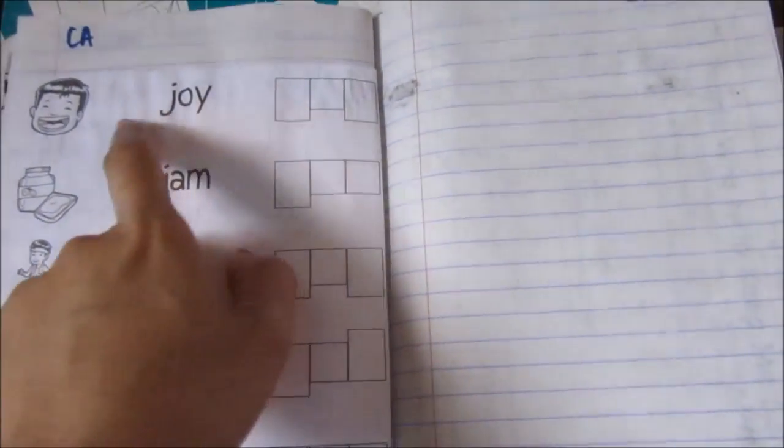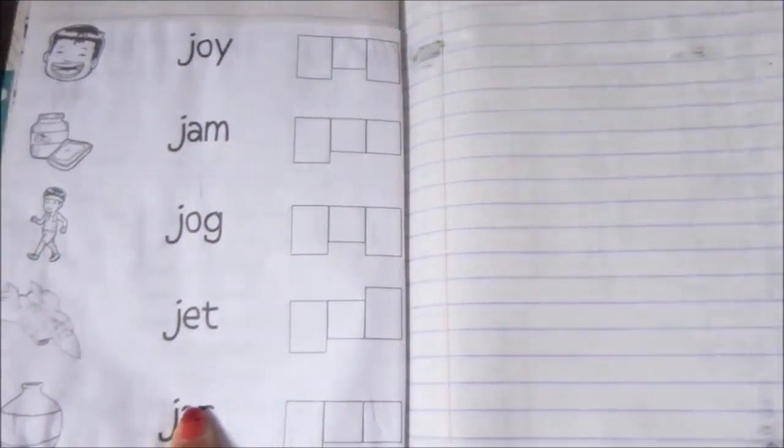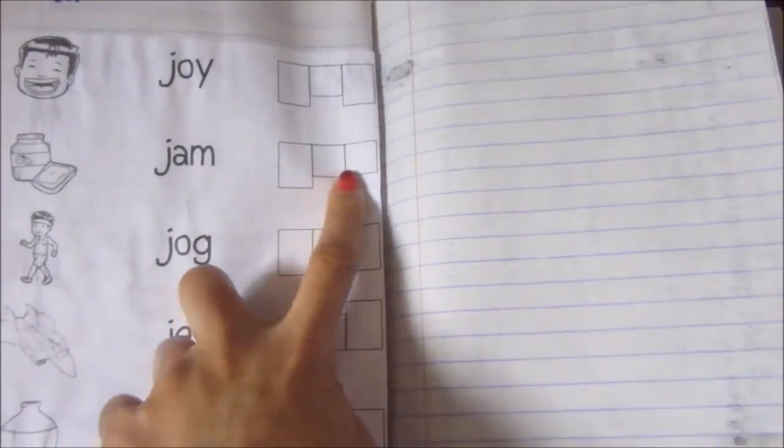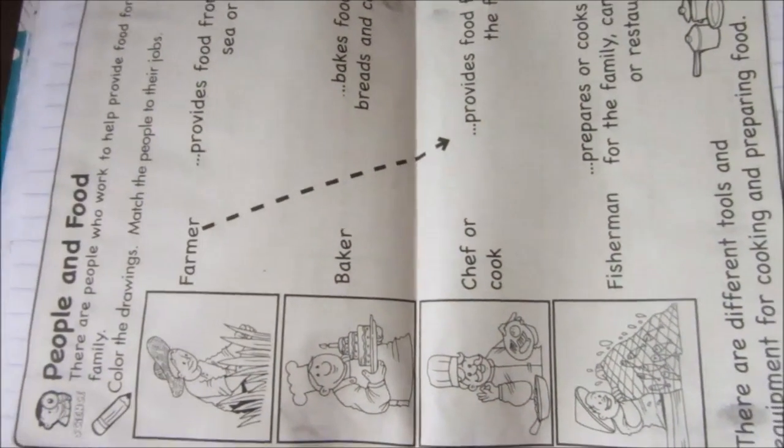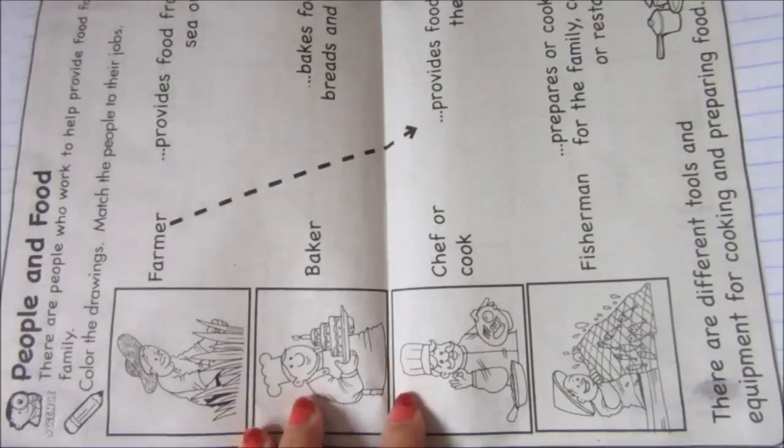And then for CA, he will just read these words and then he will copy them into the boxes. And then people and food. These are the people to provide for our food.